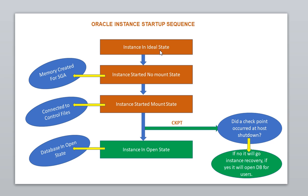When the instance was in an idle state, the next step is the instance starts in a no mount state. What does no mount mean? Basically, no mount means memory is created for the SGA. When the instance is in a no mount state, the SGA is created.